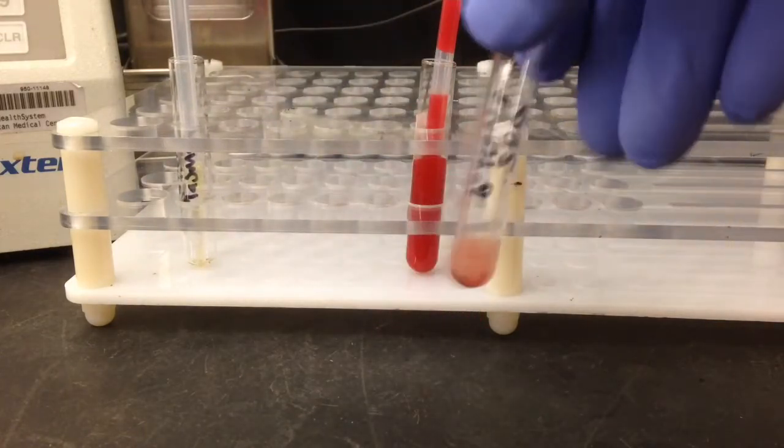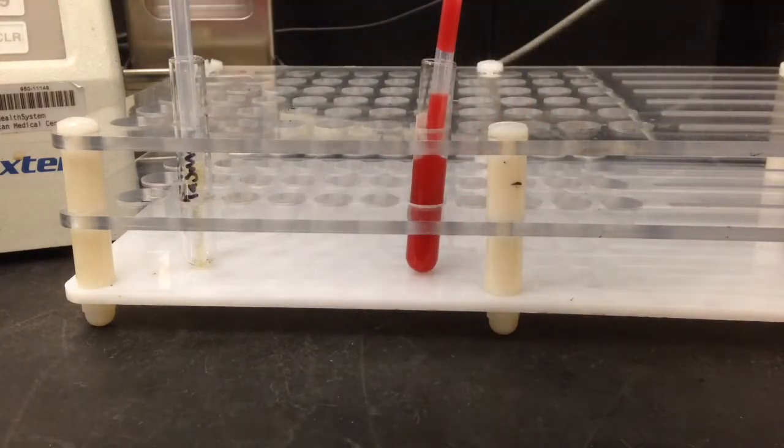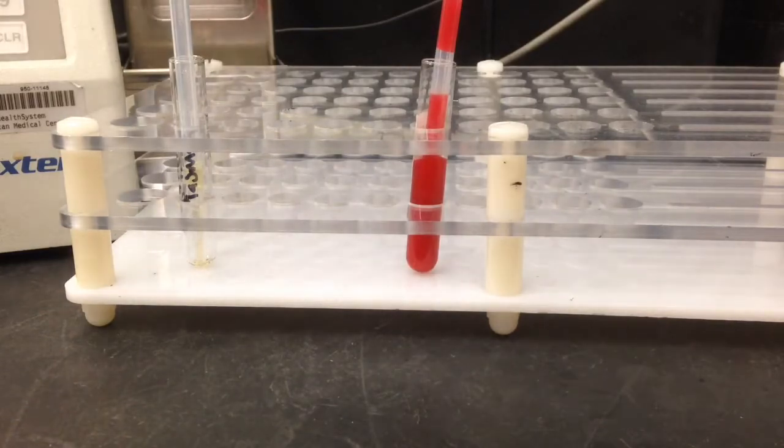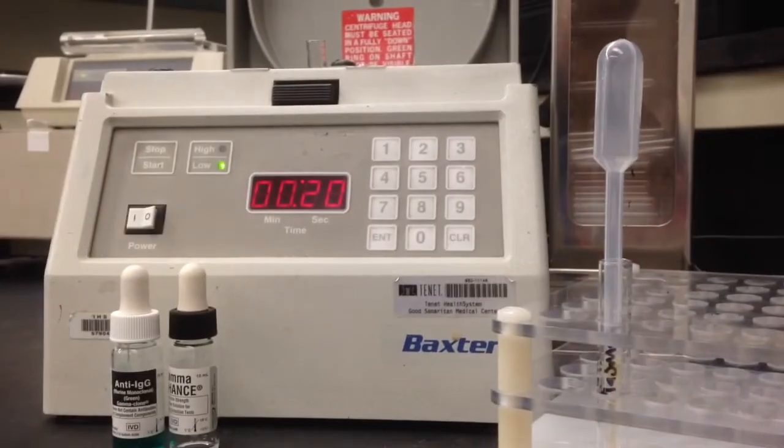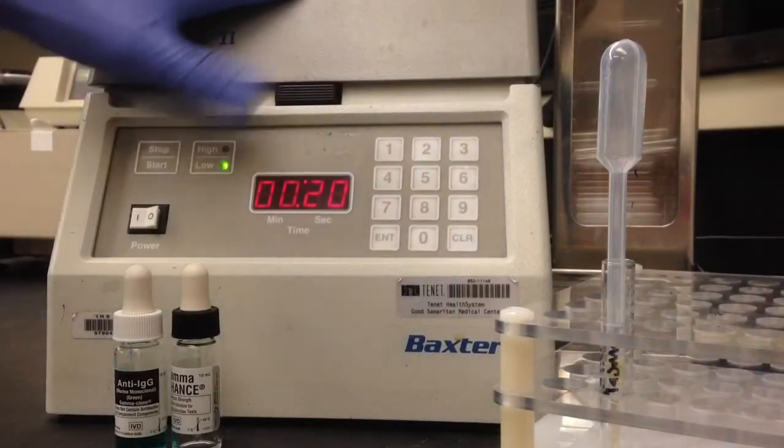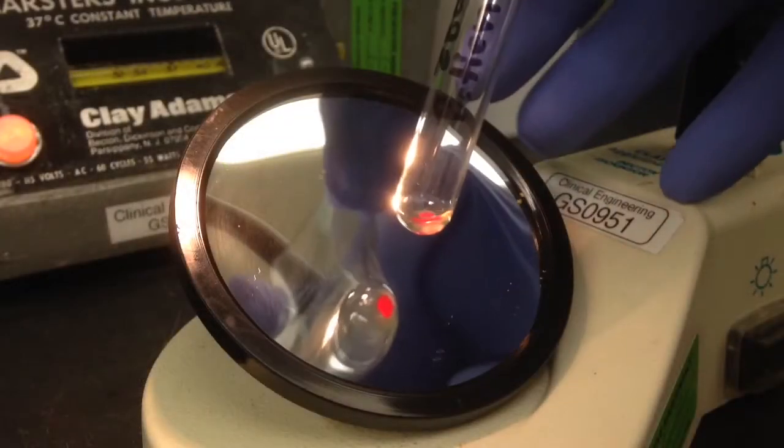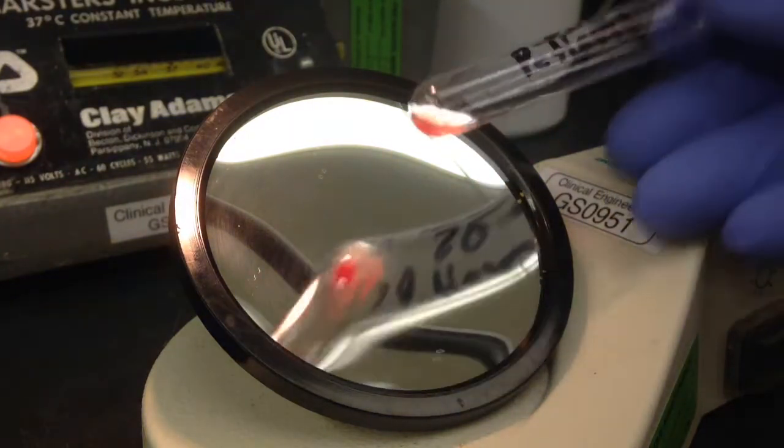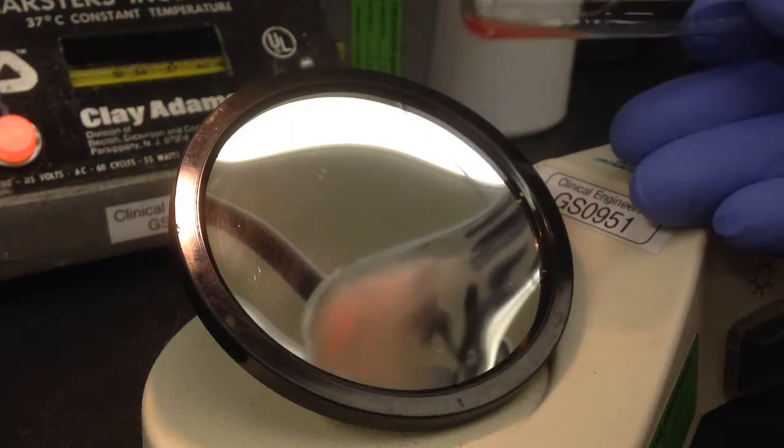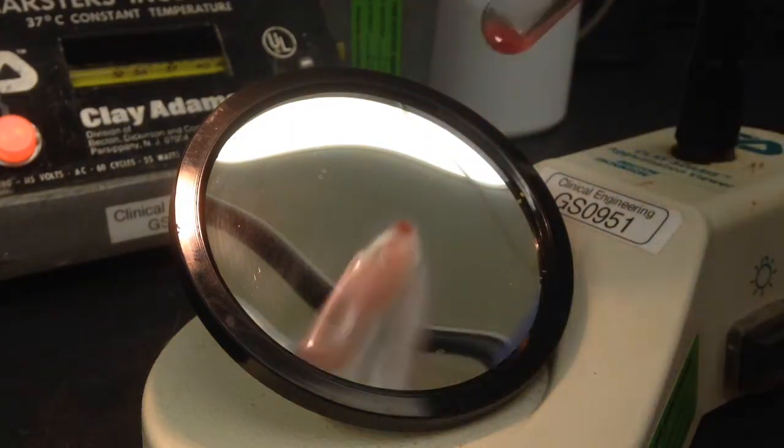We're going to be doing three stages of agglutination testing. The first stage, which I'm doing right now, is called the immediate spin. This is done immediately after the plasma and the red cells have been mixed, so we're going to check for agglutination at the immediate spin stage. As you can see, there is none.